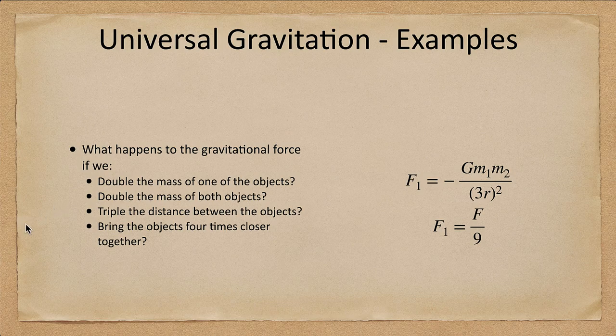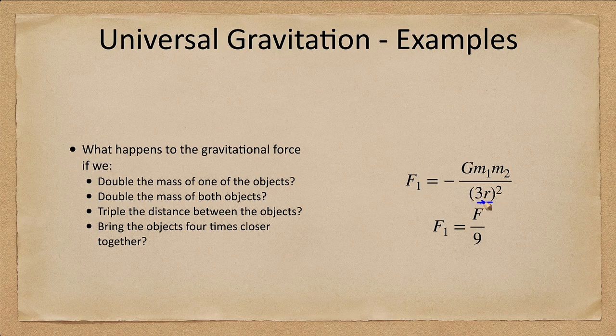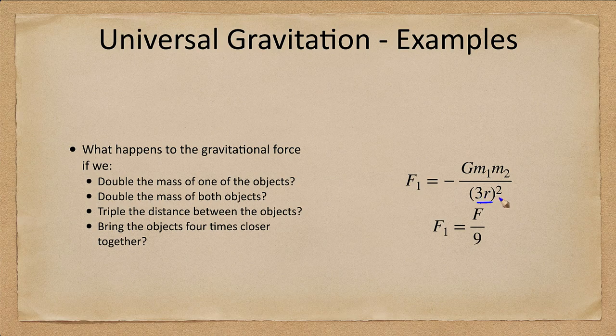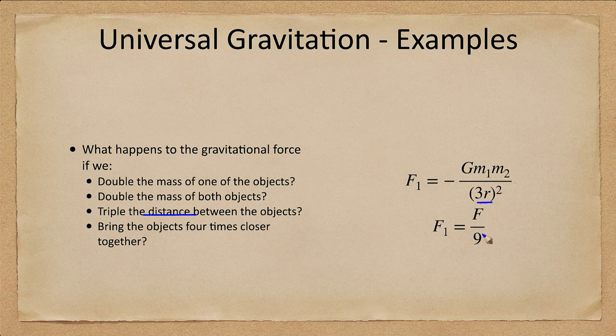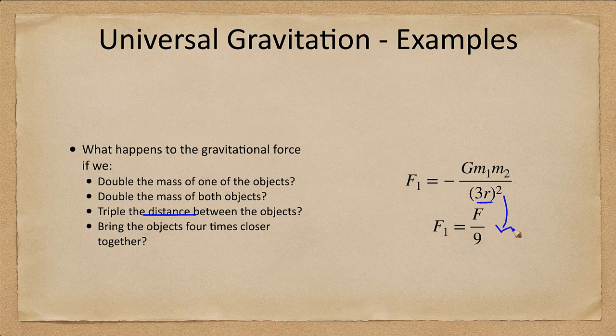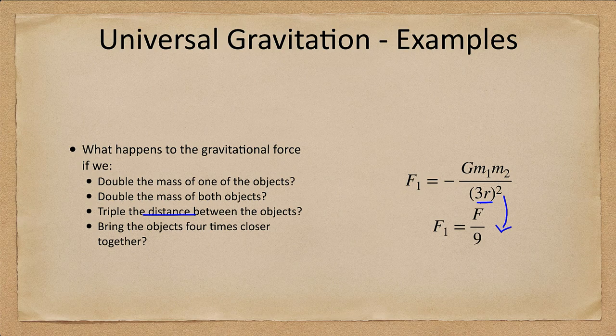What if we look at the distance? What if we triple the distance between the objects? So what was r becomes 3r? Well 3r squared is 9r squared and we will get that the force will now be 1/9th. So we have tripled the distance, they are further apart, and the force is going to be 1/9th as much. And this is the inverse square law so it doesn't just drop off as the distance. So you don't double the distance and that doesn't mean half the force. It actually if you triple the distance it is 1/9th the force.